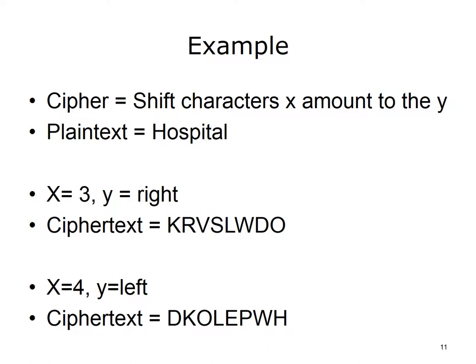For a simple example of encryption, let's use a cipher that shifts characters of the alphabet a specific number, x, to the left or right, y. The x and y values are called keys. Many people could use the same algorithm or cipher of shifting characters, but what makes each specific cipher different is the number of characters shifted and the direction. If we shift all characters three to the right, the plain text 'hospital' would be encrypted to K-R-V-S-L-W-D-O. If we shift four characters to the left, 'hospital' would be encrypted as D-K-O-L-E-P-W-H. The same cipher with different keys will create different ciphertext.